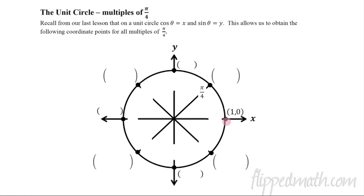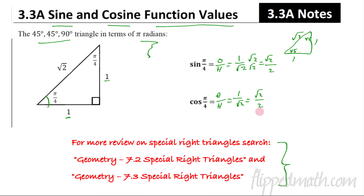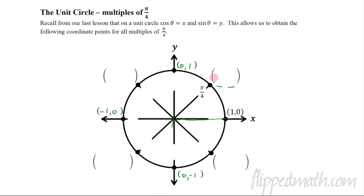On the unit circle, I'll label all the axis points first. The point at the right is (1, 0), the top is (0, 1), the left is (−1, 0), and the bottom is (0, −1). The angle π/4 is at about 45 degrees. Since cosine of θ equals x and sine of θ equals y on the unit circle (radius = 1), the coordinate at π/4 is (√2/2, √2/2).